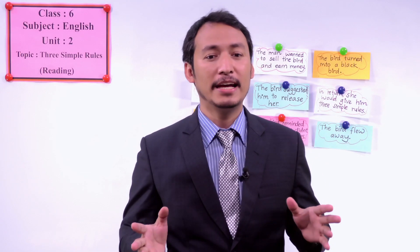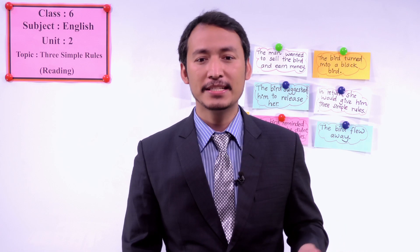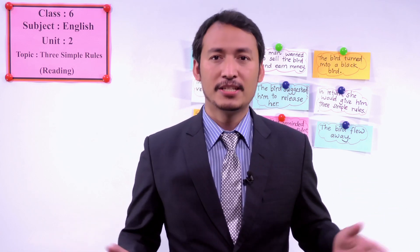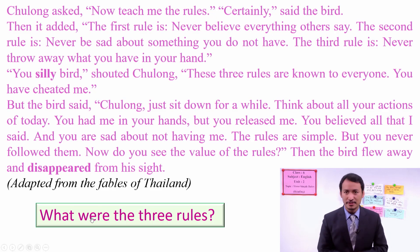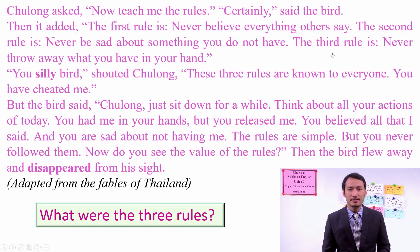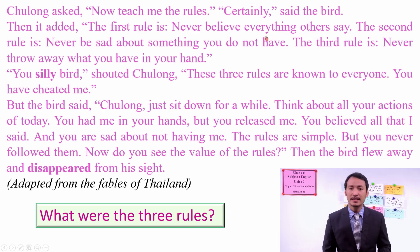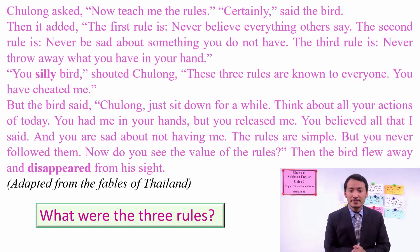The bird flew away and disappeared from his sight. Silly means the man showed no sense, and disappeared means lost or not in sight. So what were the three rules? Never believe everything others say. Never be sad about something you do not have. And never throw away what you have in your hand. These were the three simple rules taught by the bird to the man — already known, but it was a reminder that following rules is very important and profitable.